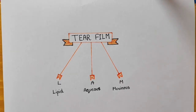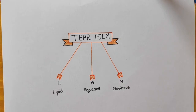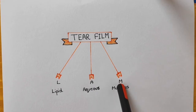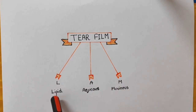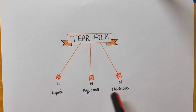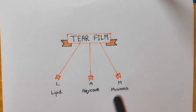There are three layers from outside to inside. You can remember this by the word LAMB: L, A, M — Lipid, Aqueous, and Mucinous.